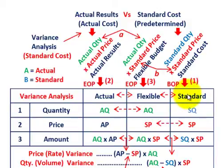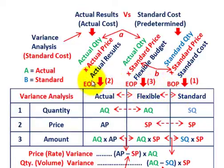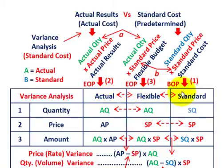You're going to have your standard amount, which you would have determined at the beginning of the period or when you launched your product. Then when you're actually producing the product — either during production or at end of period — you're going to know your actual results for the period. Based on your actual results and the standard that you set, you're going to have some flexible amount. So let's look at the general model.